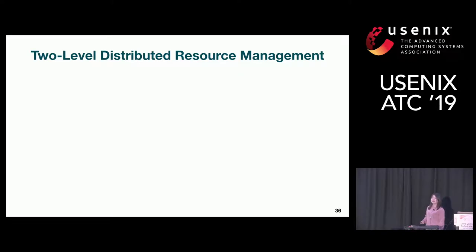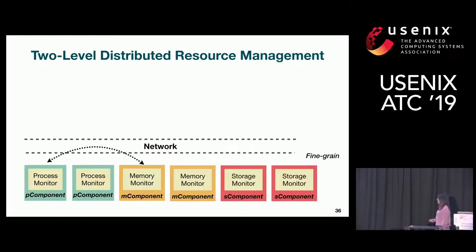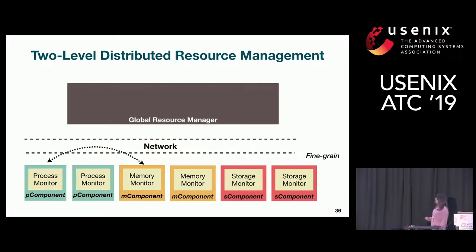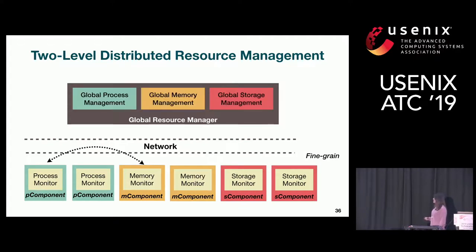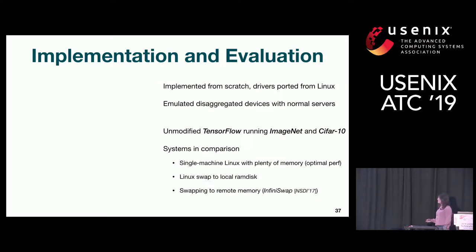Now I'll briefly talk about distributed resource management. Our idea is a two-level management. At the lower level, we do fine-grained management where each component communicates on its own with fine-grained resource allocation and access. We maintain one or multiple global resource managers that handle global process management, global memory management, and global storage management. For coarse-grained resource requests, like when you want to allocate a new process, you go to global process management. But when you create a new thread, it is handled locally. I don't have time to go into all the design details of LEGO OS — if you're interested, check our paper.